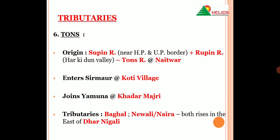Agli important tributary Yamuna ki hai, Tones river, jo ki dho streams ko mila kar banti hai — Supan aur Rupan. Supan river ka origin hota hai HP aur UP ke border ke nisdik, aur Rupan nadhi ka origin hota hai Harki Doon Valley se. Yeh dono streams Netwar mein milkar banati hai Tones nadhi. Sirmoor mein yeh nadhi enter karti hai Koti village mein, aur Yamuna ko join karti hai Khadar Bajri mein. Supan aur Rupan basically Uttarakhand se originate hoti hain aur phir Koti village mein Tones nadhi ban kar enter karti hai Himachal Pradesh mein. Tones ki jo major tributaries hain wo hain Baghar aur Nivali/Naira river, aur yeh donon tributaries Sirmoor district mein rise karti hain, in the east of Dhar Nigali.